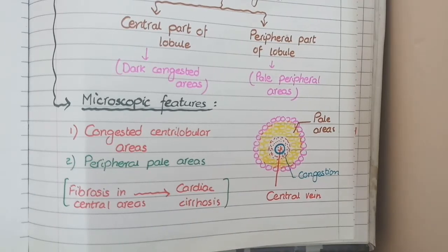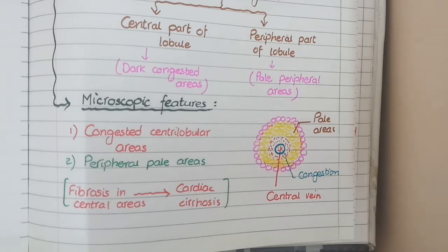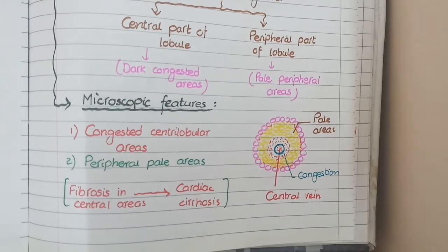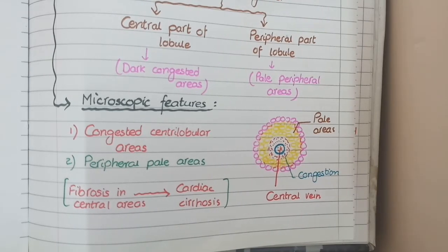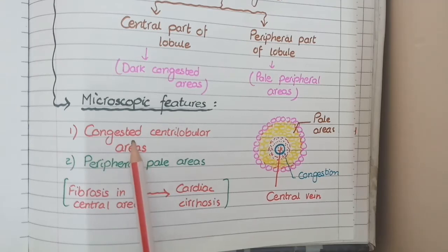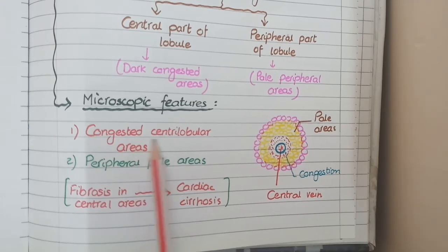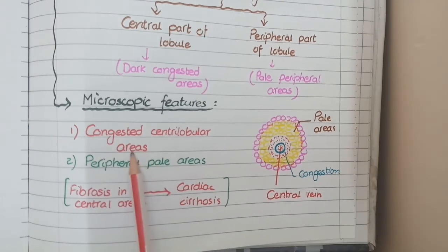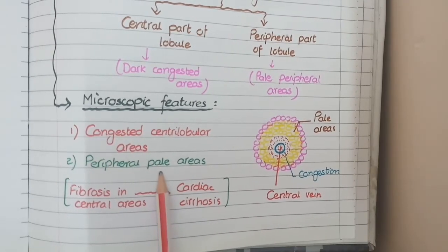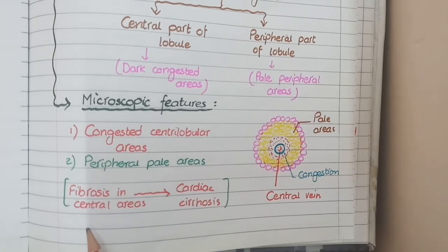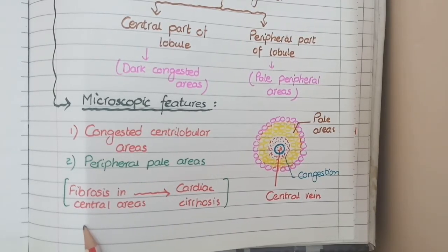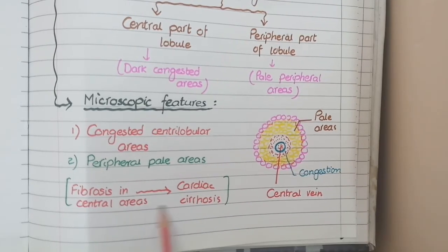Overall, in congestive hepatomegaly you see nutmeg liver — meaning the liver has a speckled or mottled appearance due to alternating congested and non-congested areas. On microscopy you see the same features: congested centrilobular areas surrounded by peripheral pale areas. In some microscopic cases you can also see cardiac cirrhosis.